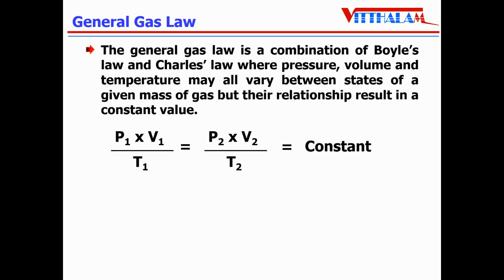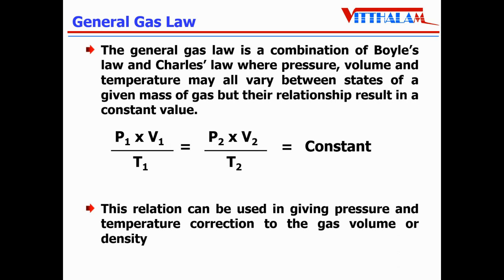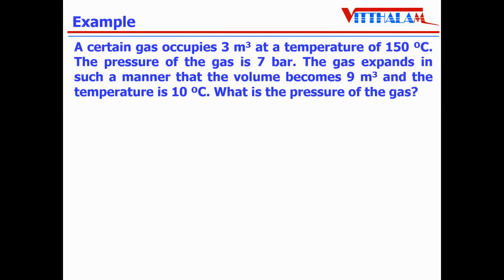There is a General Gas Law which is a combination of Boyle's Law and Charles' Law. It states that for a certain mass of any gas, the relation between pressure, volume, and temperature is: P1V1/T1 = P2V2/T2 = constant. This relation can be used to give pressure and temperature corrections to the gas volume or density. Let us understand with an example: a certain gas occupies 3 m³ at a temperature of 150°C, and the pressure is 7 bar. The gas expands such that the volume becomes 9 m³ and the temperature drops to 10°C.